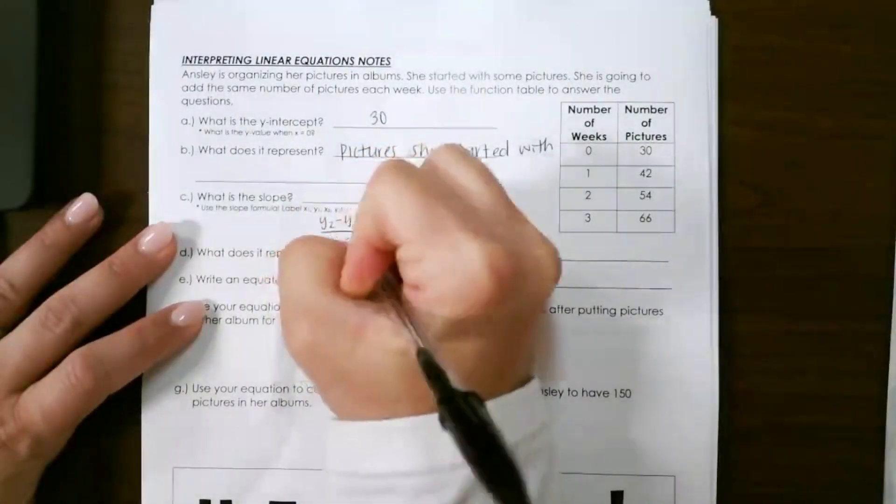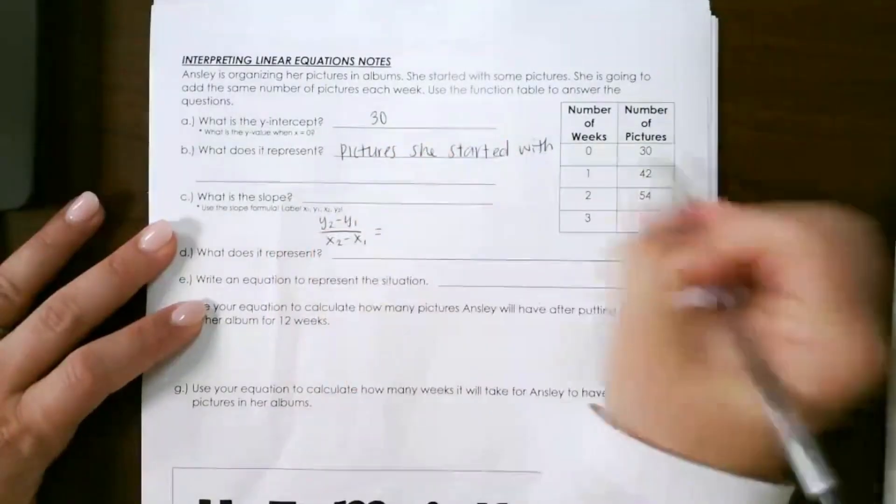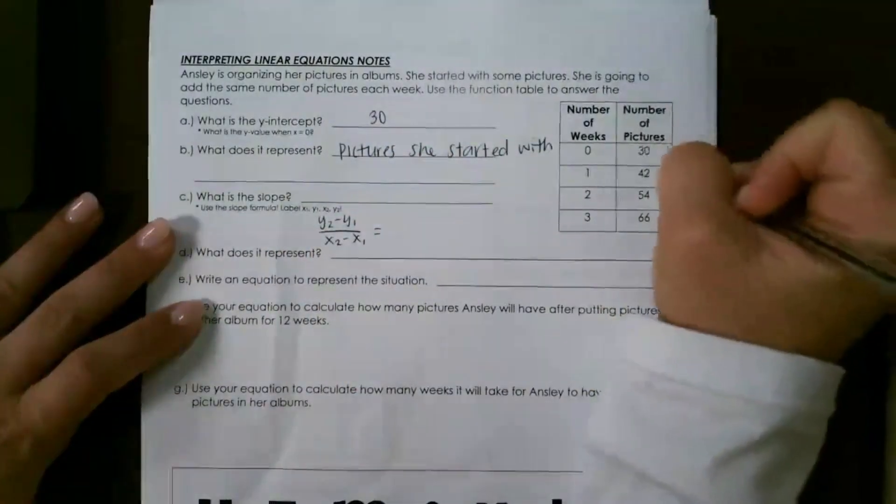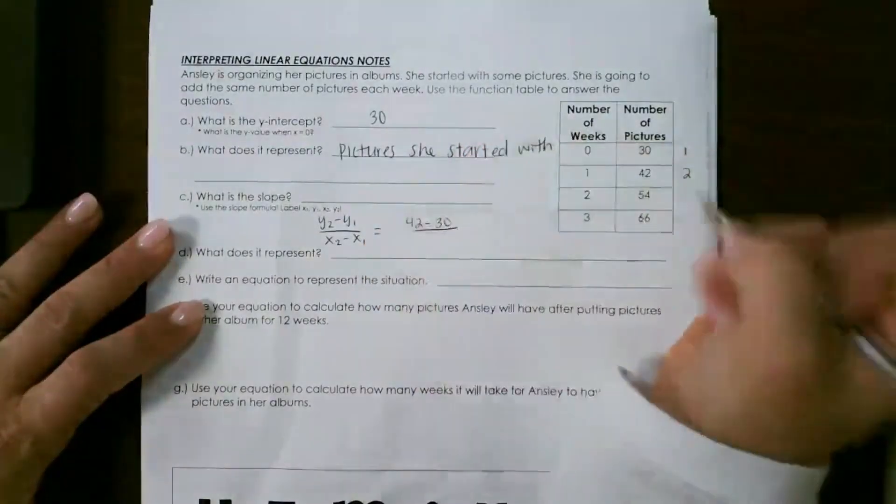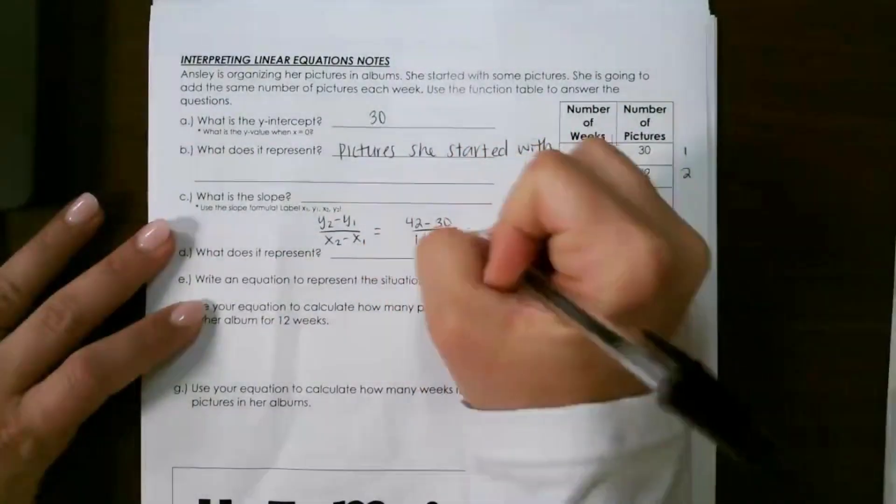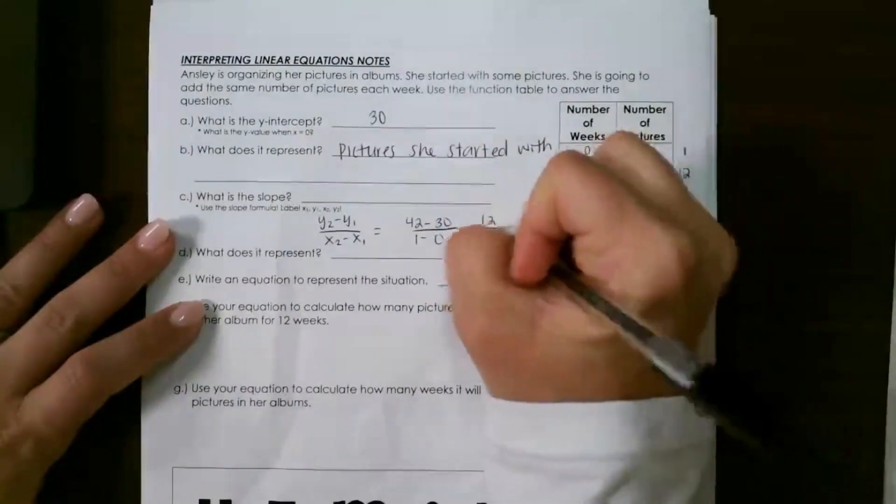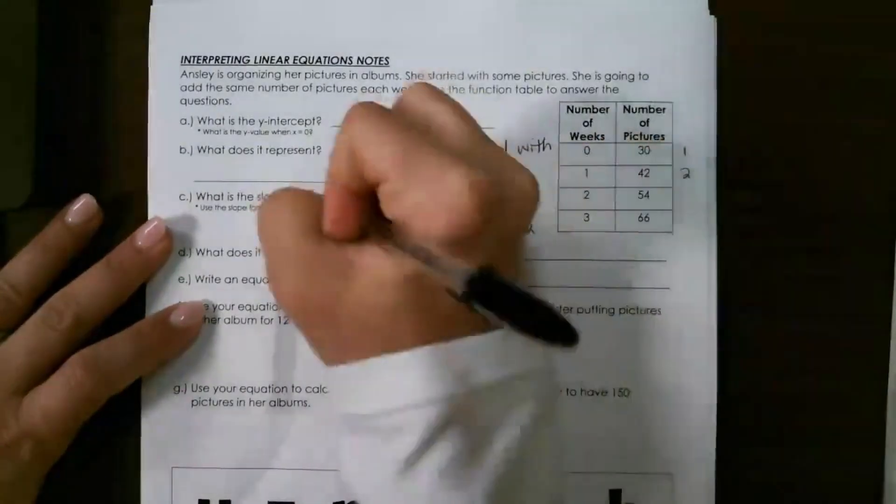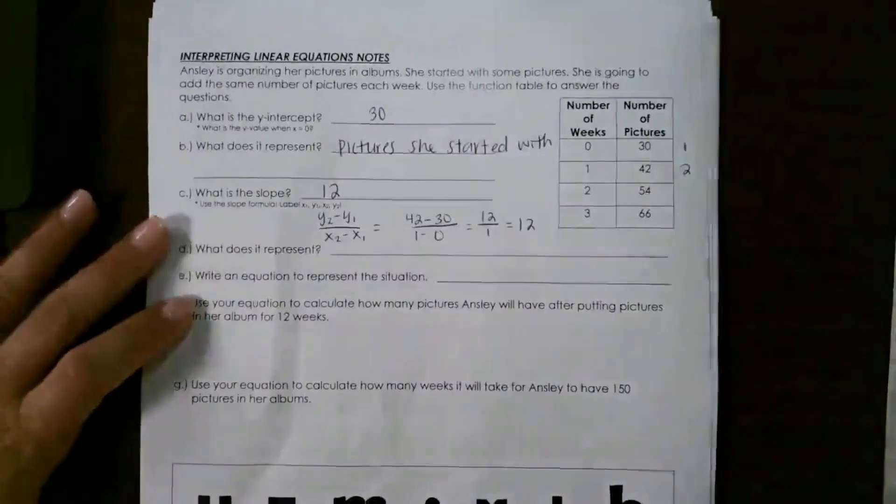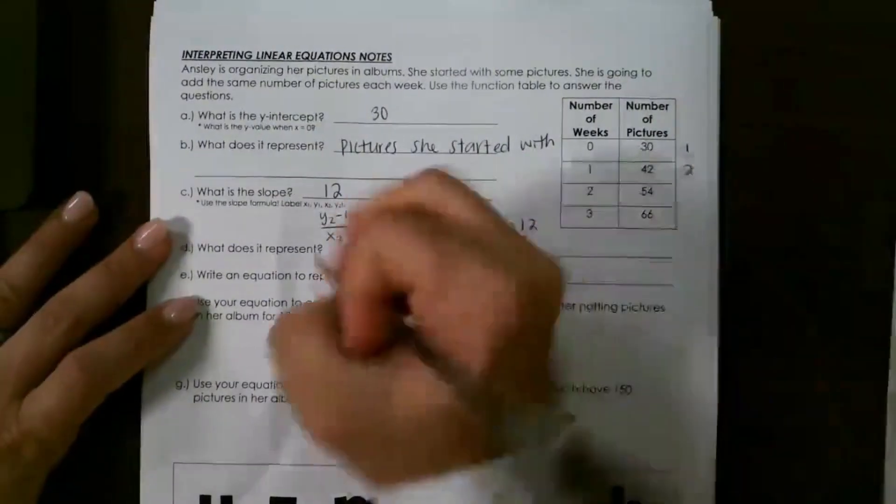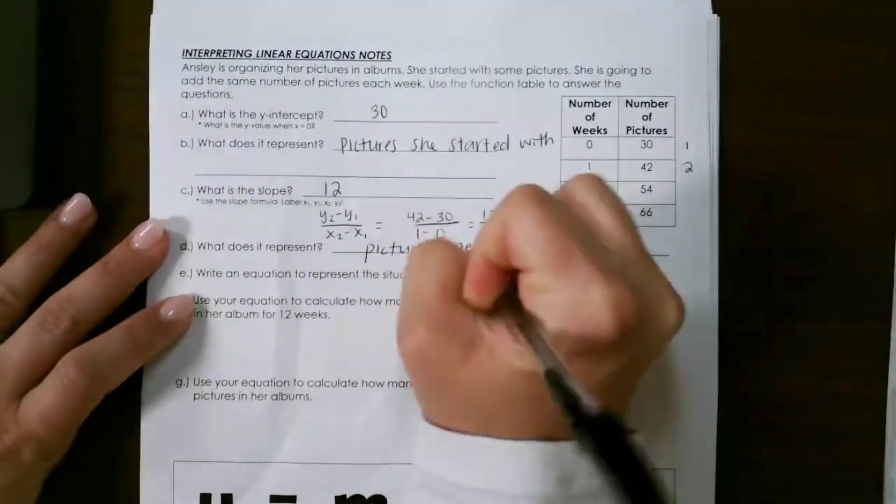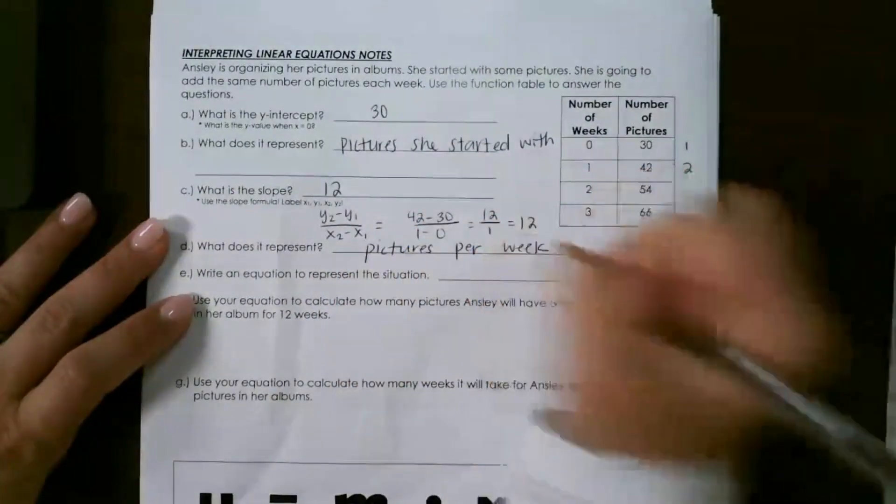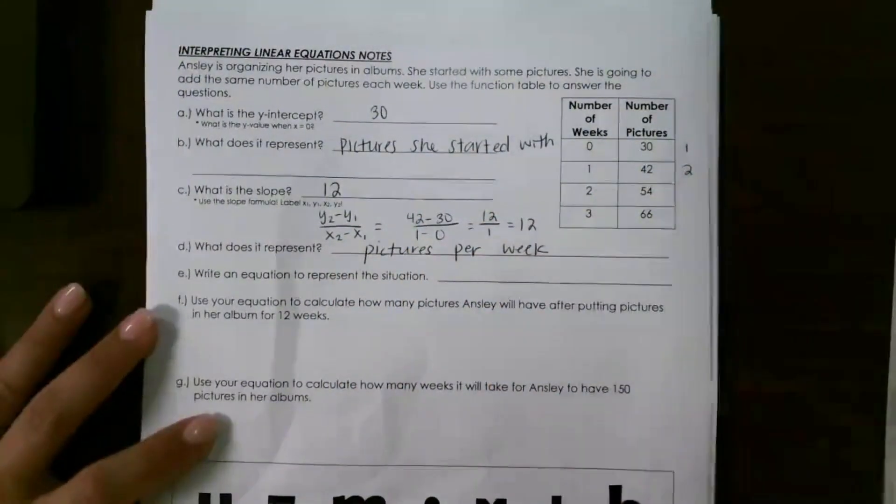And you can pick any two points. So I have 42 minus 30 over 1 minus 0, so that would be 12 over 1. So our slope is going to be 12, and our slope represents pictures per week. So that means she saves 12 pictures per week.